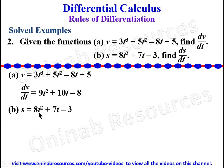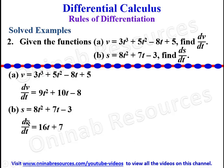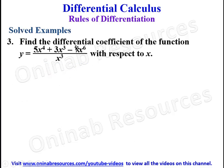For part (b), s = 8t^2 + 7t − 3. The ds/dt will be: 8 times 2 gives 16t raised to power 1, so 16t. Then t raised to power 1 times 7: reducing the power by 1, t disappears, leaving 7. The derivative of the constant is 0. So ds/dt = 16t + 7.